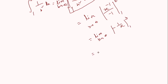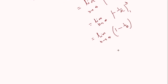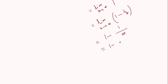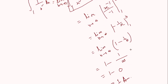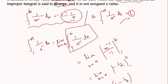This equals the limit as b tends to infinity of (−1/b) minus (−1/1), which gives 1 − 1/b. Now replacing b by infinity: 1 − 1/∞ = 1 − 0 = 1. So the result of this integral is 1.